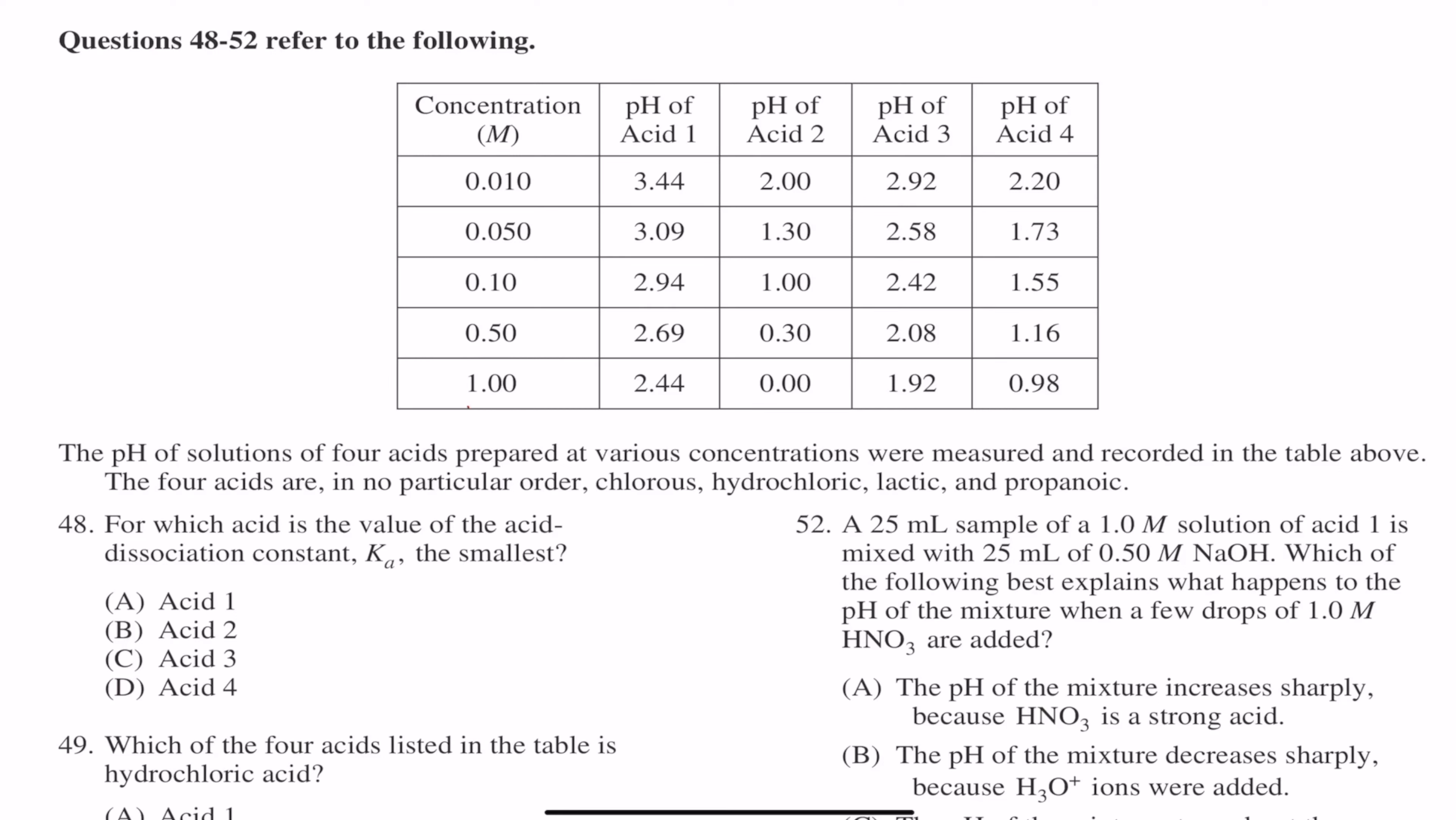All right, questions number 48 through 52 refer to the following. The pH of solutions of four acids prepared at various concentrations were measured and recorded in the table above. The four acids are, in no particular order, chlorous, hydrochloric, lactic, and propanoic acid.